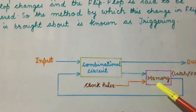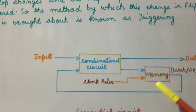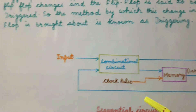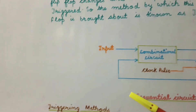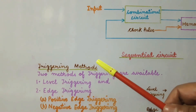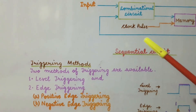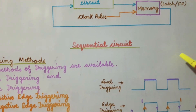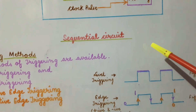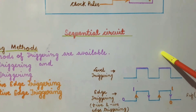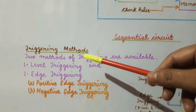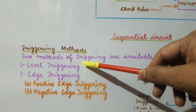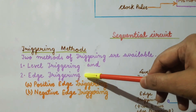Now let us discuss the different types of triggering methods. For the different positions of the clock we have the triggering of our latches or flip-flops. We can divide the triggering methods into two types: the first one is level triggering and the second one is edge triggering.